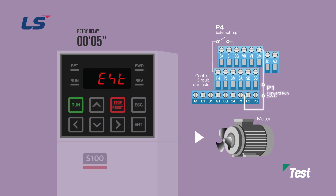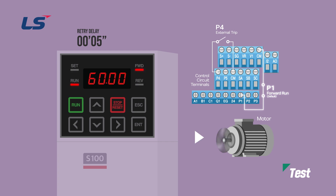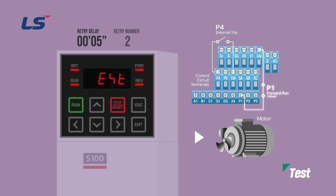Repeat the same method several times. Since we set the number of restarts to 2 earlier, we can see that after the third external trip occurs, turning P4 off will not restart the motor.